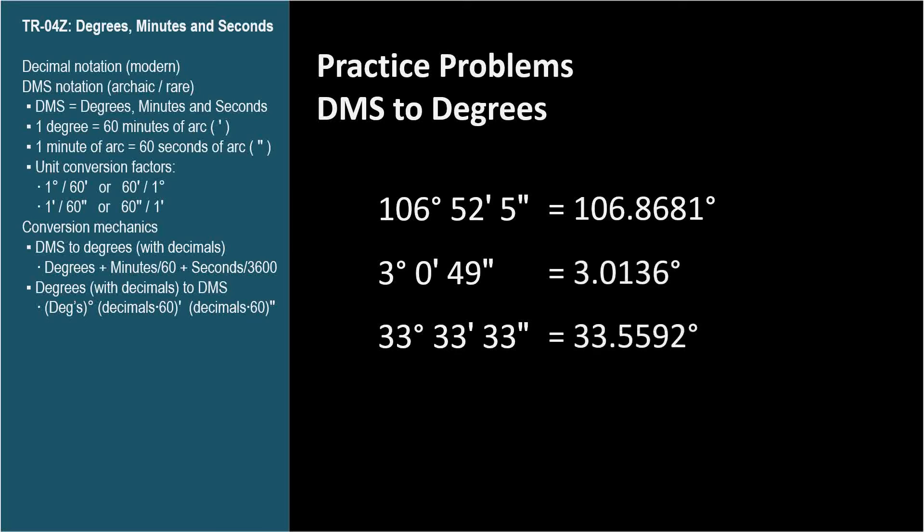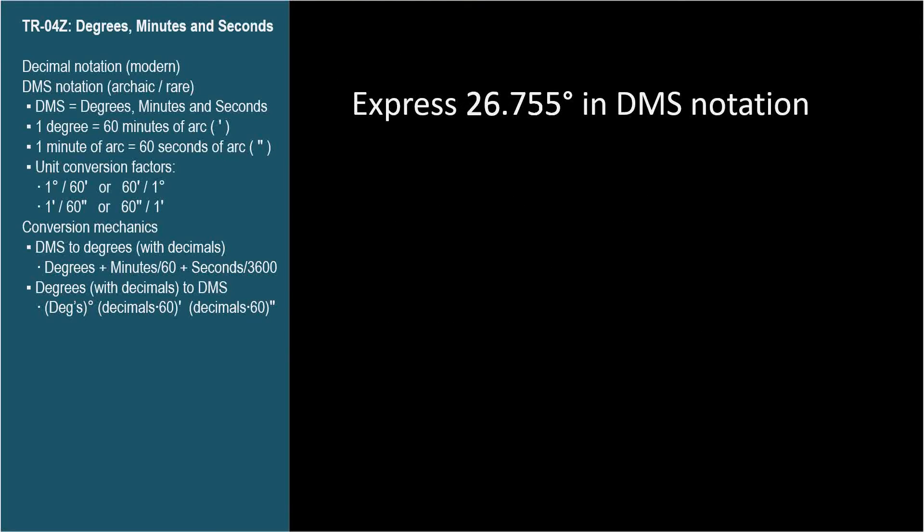Going the other direction is pretty easy, too. Let's explain it with an example. What is 26.755 degrees expressed in DMS notation? Well, it's always easy to start with the whole degrees.